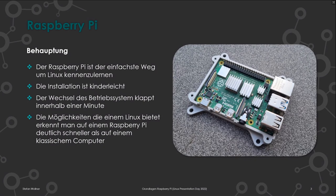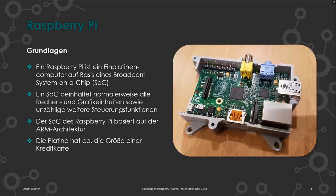Bevor wir Richtung Linux gehen, ist natürlich zu klären: Was ist überhaupt der Raspberry Pi? Der Raspberry Pi ist ein Ein-Platinen-Computer – tatsächlich ein richtiger Computer, der einen SoC hat, das nennt sich System on the Chip. In diesem SoC sind die CPU und die GPU direkt enthalten sowie weitere Steuerungsfunktionen. Die meisten kennen einen SoC aus einem Android-Handy.